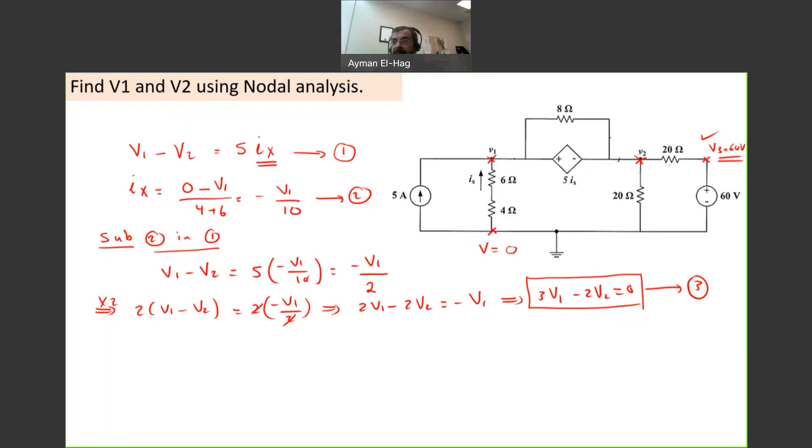How to get this equation? We will use a new concept that we did not use before, which is the concept of super node. Whenever you have a voltage supply between two nodes, you can consider this voltage supply, all of it, as one giant node. All of this is a big node. I don't care what is inside, so as if this is just a dot, a big dot. This is what I call the super node.